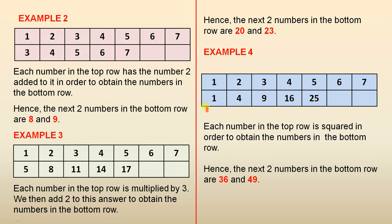Example 2: the numbers from 1 to 7, and you have those first five numbers there. Each number in the top row has the number 2 added to it in order to obtain the numbers in the bottom row. Hence, the next two numbers in the bottom row are 8 and 9. So 1 plus 2 gives you 3, 2 plus 2 gives you 4, 3 plus 2 gives you 5 and so on. So 6 plus 2 gives you 8 and 7 plus 2 gives you 9.